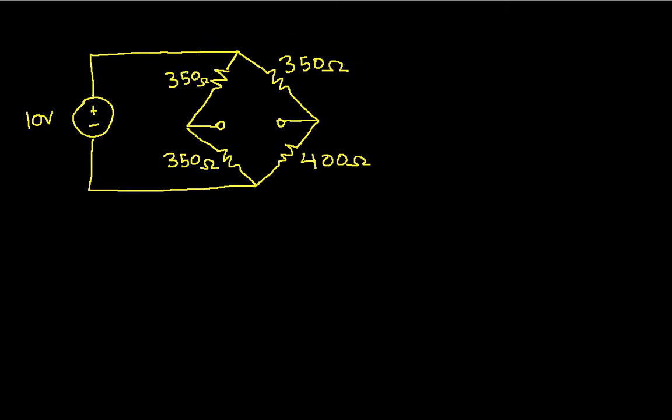Hopefully you'll recall from the introductory video on the Norton equivalent circuits, we're looking for a circuit that looks like this, a current source in parallel with the resistor. The resistance we call RTH because it's the same as the Thevenin equivalent resistance, and we need to find the short circuit current.